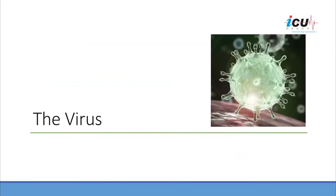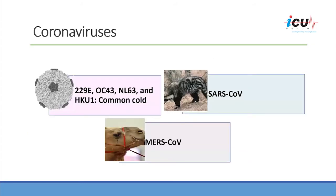Starting with the virus first. We have seen several viruses over the years that cause upper respiratory tract infection. They are from the coronavirus family, such as 229E, OC43, NL63, and HKU1. Those viruses circulate in the community year-round, especially in cold weather, and cause upper respiratory tract infections such as the common cold, and they rarely cause lower respiratory tract infection.